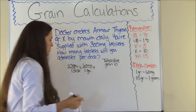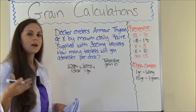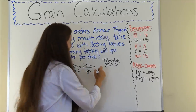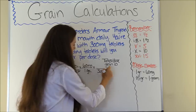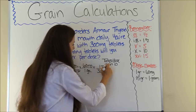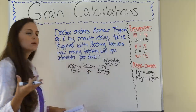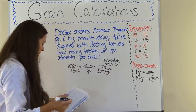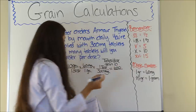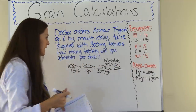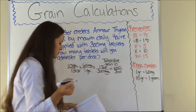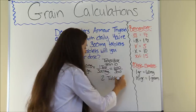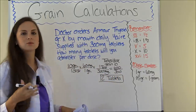Grains cancels out. Now we need to apply these numbers to what we're supplied with: 300 milligrams equals one tablet. Milligrams cancels out and we're in tablets per dose. So: 10 times 60 times 1 is 600, and 1 times 1 times 300 is 300. 600 divided by 300 is 2. So we're giving two tablets to equal that 10-grain dose the doctor ordered.